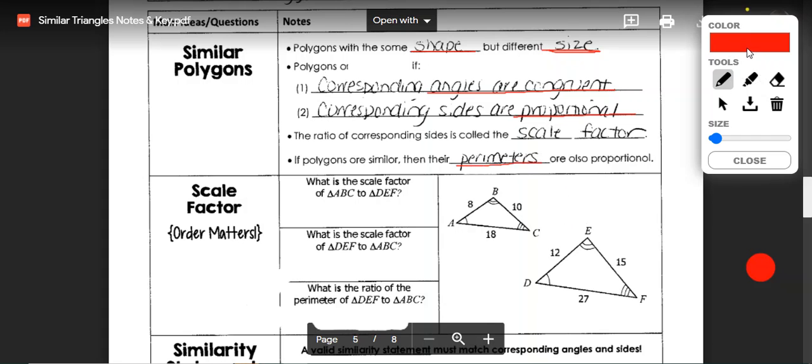Another thing to keep in mind is that in scale factor order matters. For example, if I wanted to list the scale factor of triangle ABC to DEF, I'm going from small to large, so our scale factor would be two to three.